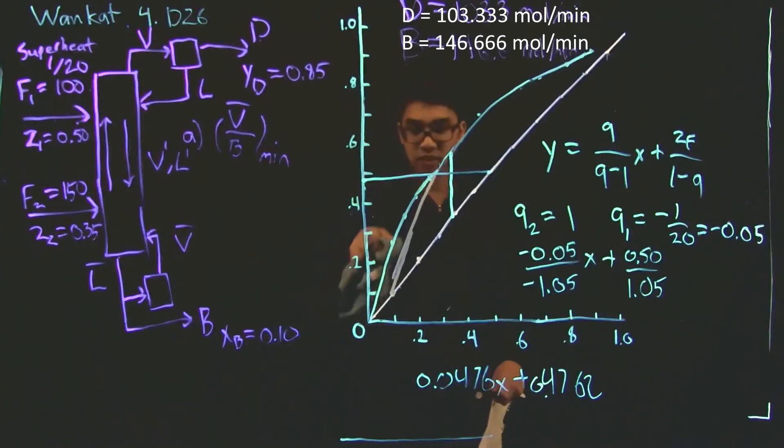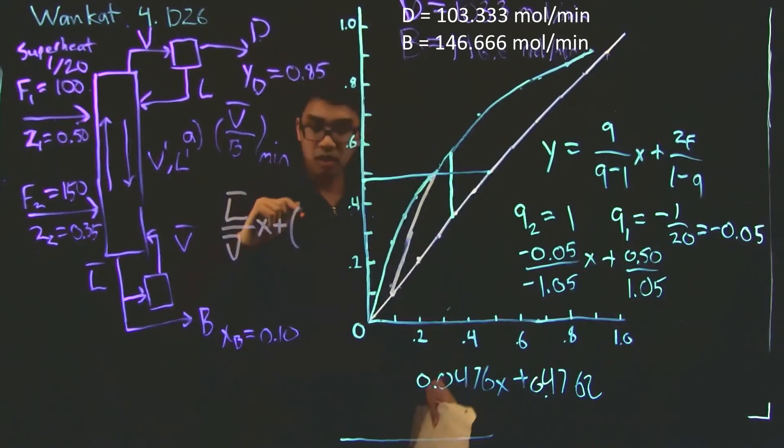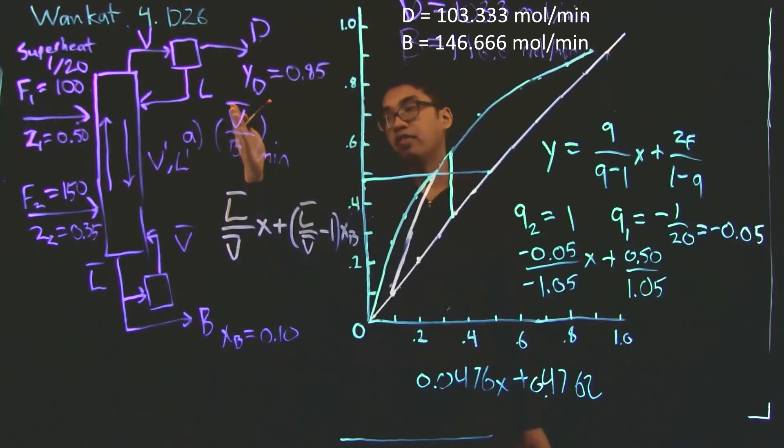So this is not the best line, but you get the idea. And so after that, we know that the operating line equation is L bar over V bar x plus L bar over V bar minus 1 xB. And so by measuring the slope of this operating line, we can find L bar and V bar. And then after that, it's a fairly trivial calculation to find V bar over B. So let's do that. So if you take this operating line and you measure it, you'll find that the slope is approximately equal to 3. So L bar over V bar is approximately 3.0.